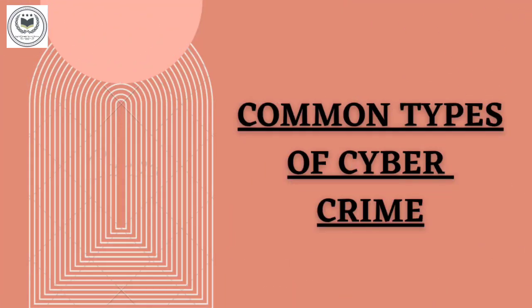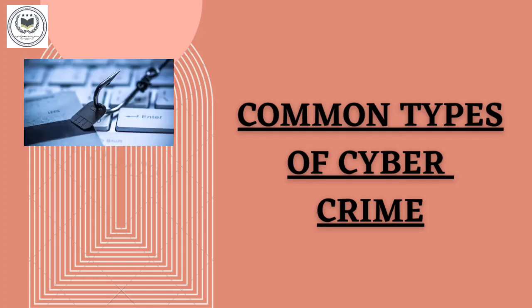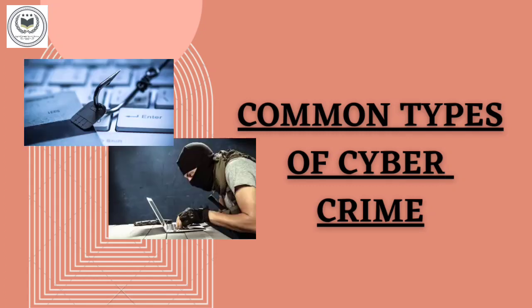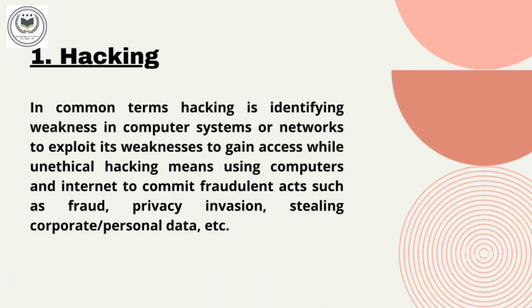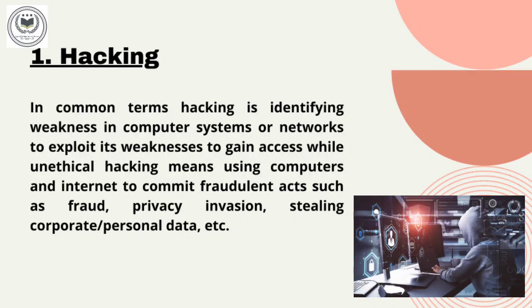Next, we will be learning a few common types of cybercrime, like hacking, phishing, child pornography, cyber terrorism, cyber extortion, and spreading false information or fake news. First, we will start with hacking. In common terms, hacking is identifying weakness of a computer system or network to utilize its weakness to gain access to the computer. On the other hand, cybercrime means using a computer or internet to commit fraudulent acts such as fraud, privacy invasion, stealing corporate or personal data, etc.